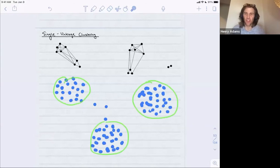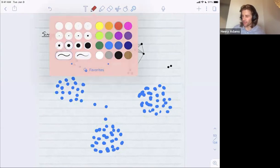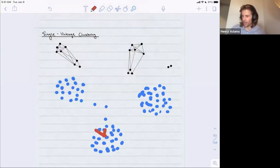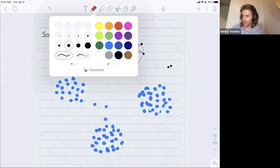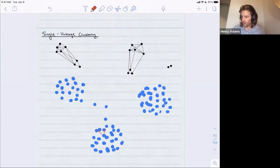and then a couple outlier points. And the problem is that in single-linkage clustering, you won't quite measure that, because by the time you've added in enough edges to connect this cluster all up,